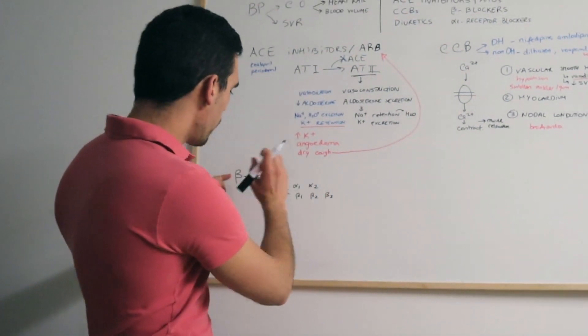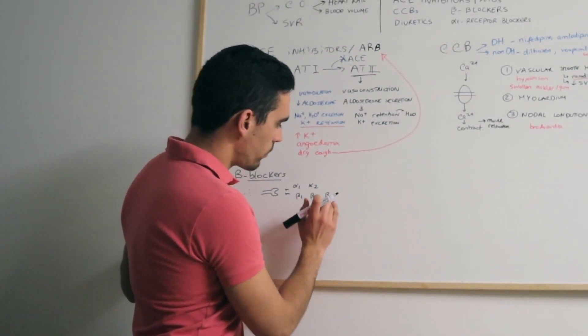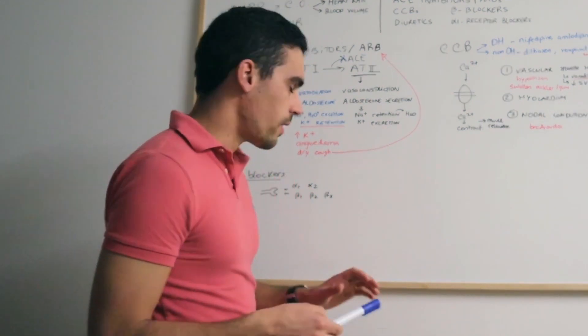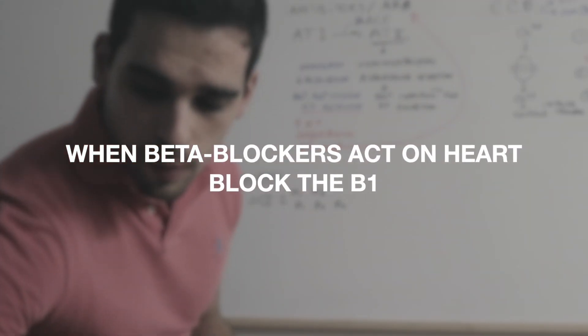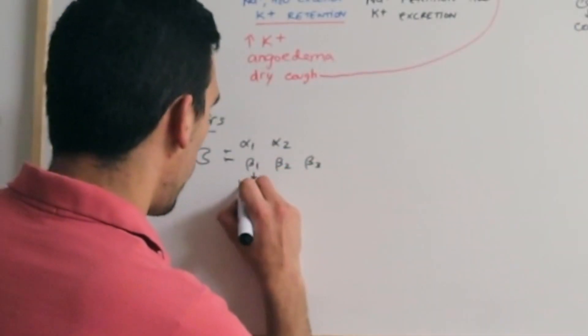The beta blockers will block that action on the beta-1 and beta-2 receptors. Let's talk about the beta blockers themselves. When they act on the heart, they block the beta-1 receptors. So the beta-1 are on the heart.